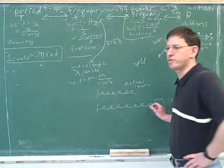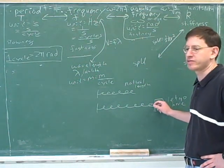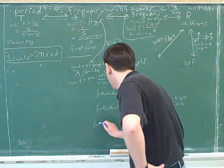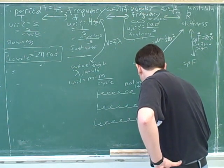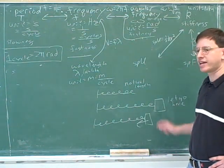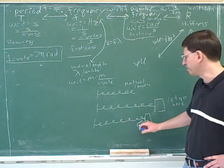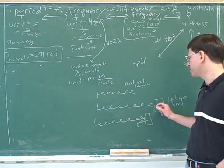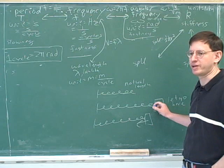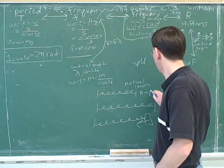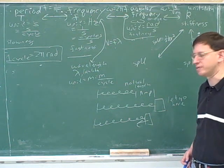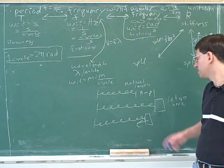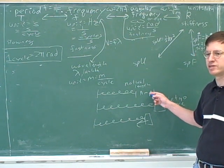This is the maximum displacement from the natural length — the furthest we're ever going to get from the natural length. Most of the time, it'll be closer than here. A millisecond after we let go of it, it won't be here anymore — it might be moving to the left pretty quickly. So most of the time, the displacement is less than this distance, but this is the maximum displacement. So this is the amplitude of the oscillations that the spring is going to go through.